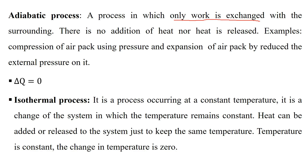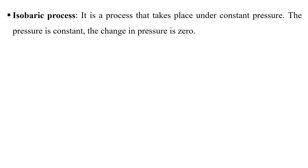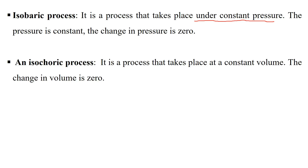An isothermal process is a process occurring at a constant temperature, meaning the change in temperature ΔT is zero. Heat can be added or released to maintain the temperature constant. An isobaric process is a process that takes place at constant pressure, so the change in pressure ΔP is zero. An isochoric process is a process that takes place at constant volume, meaning the change in volume ΔV is zero.